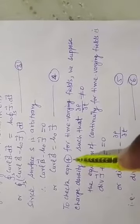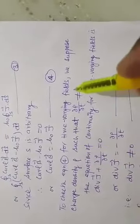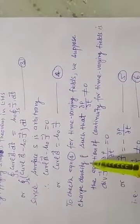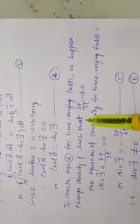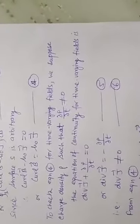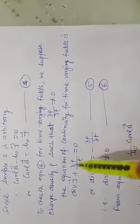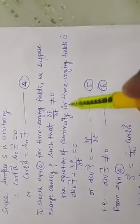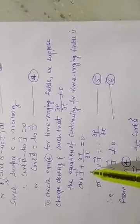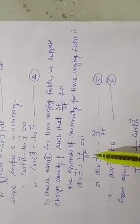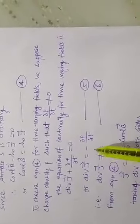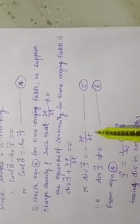To check equation number 4 for time-varying fields, we suppose charge density ρ such that ∂ρ/∂t is not equal to zero. The equation of continuity for time-varying fields is: divergence of J vector plus ∂ρ/∂t is equal to zero, or divergence of J vector is equal to minus ∂ρ/∂t.